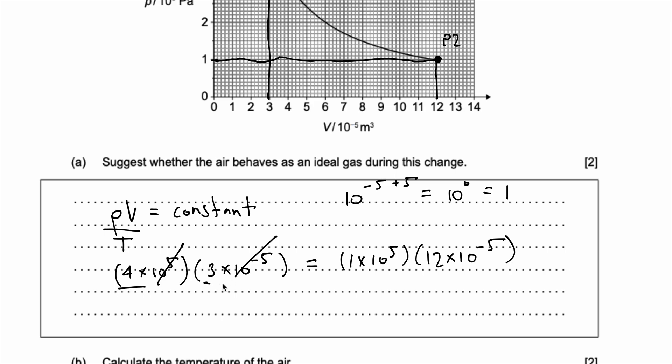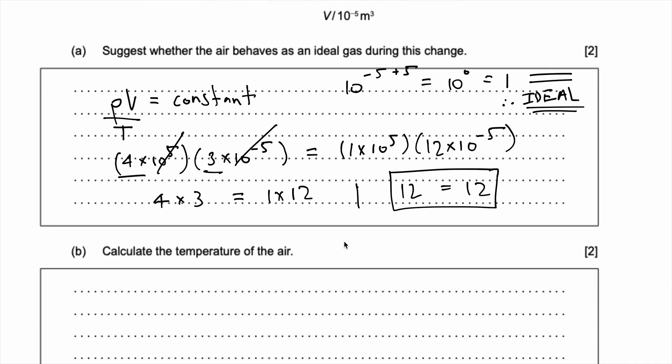Okay, so basically you just have 4 times 3 on this side, and on the other side you have 1 times 12, and we know that 12 is equal to 12. Okay, so this is an ideal gas. Next question.